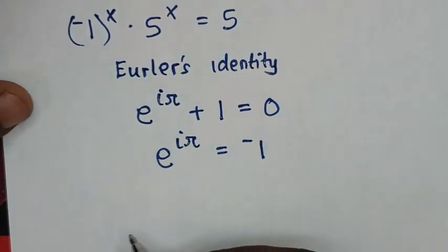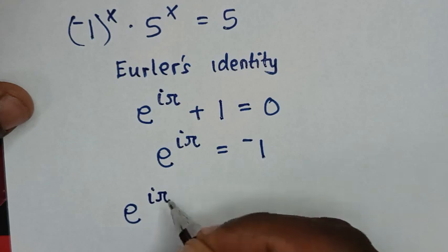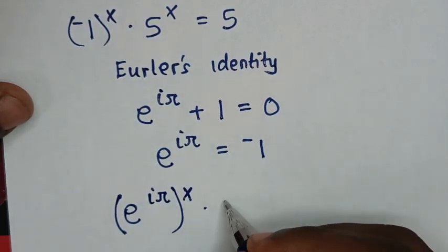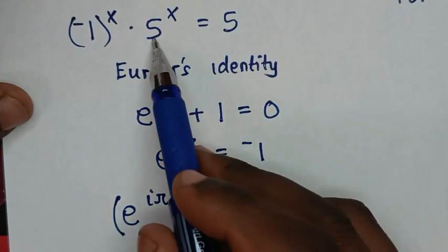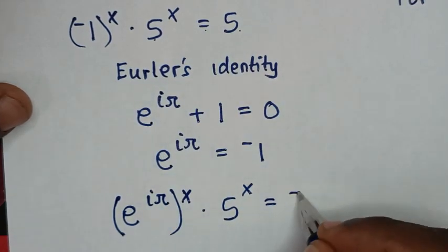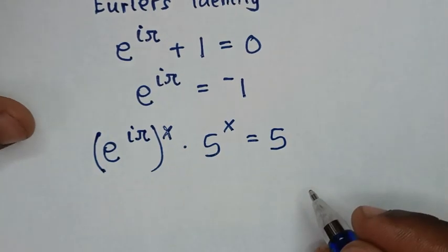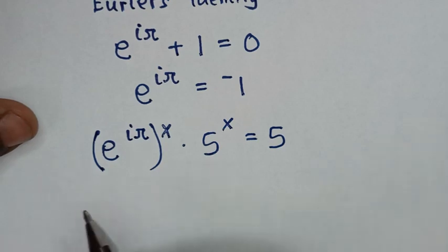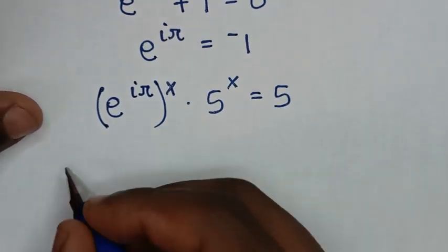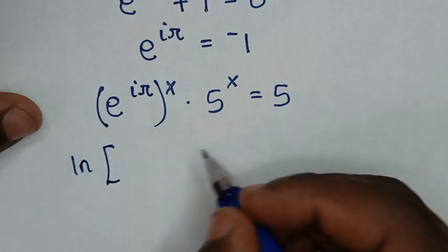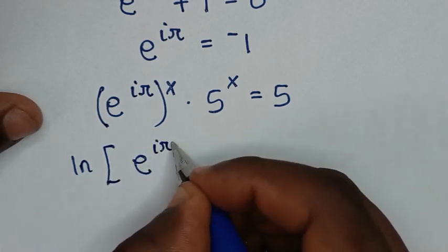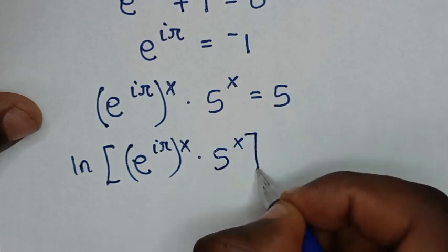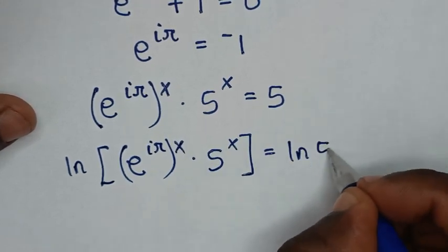So negative 1 becomes e to the power of iπ, bracket to the power of x, times 5 to the power of x, is equal to 5. In the next step, we'll apply natural logarithms — ln — to both sides. So it will be ln of e to the iπ, bracket to the power x, times 5 to the x, is equal to ln of 5.